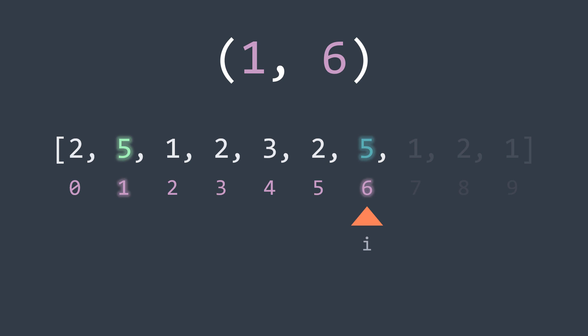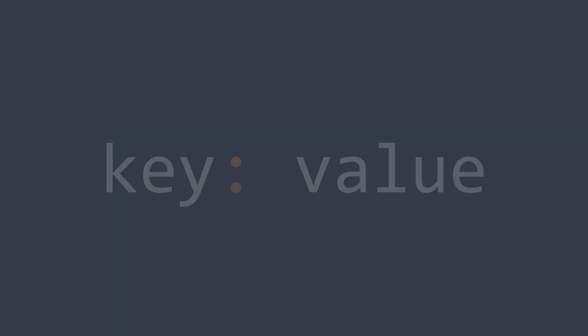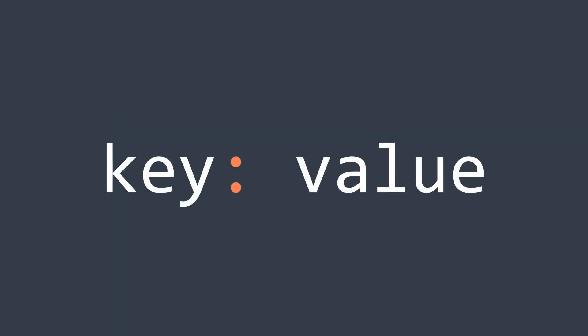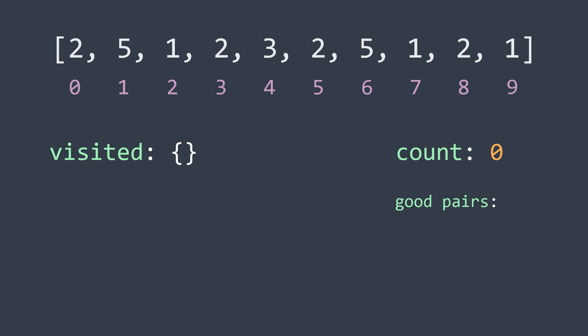You might say: to know how many times we've seen the current value, we'd have to re-traverse the array until the current index, ending up with O(n²) again. The optimization comes from using a hash map to keep track of how many times we visited each value. A hash map is a data structure where each element consists of a key and a value — the key is a number present in the array, and the value is the number of times we've seen it. We start with an empty hash map and a counter initialized to 0.